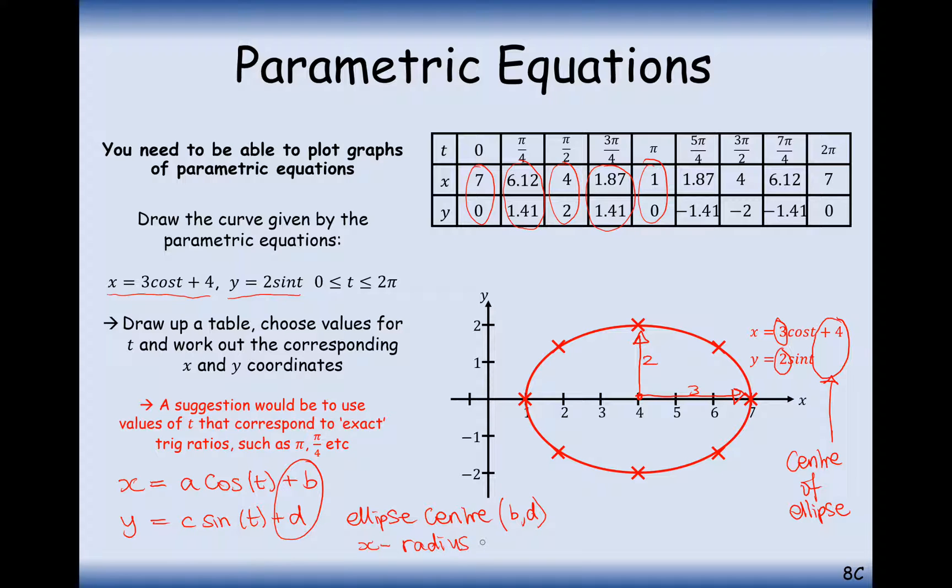Now hopefully you understand what I mean by x radius of a. It's the radius on the x-axis. In this case here, it was 3, so you would go 3 to the left and 3 to the right from your centre.